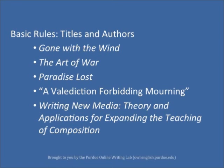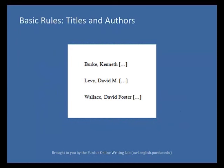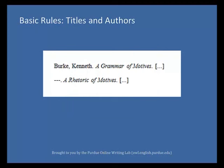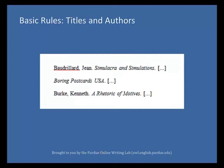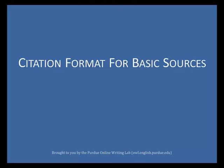Capitalize each word in the titles of articles, books, etc., but only capitalize articles, prepositions, or conjunctions if one is the first word of the title or subtitle. Use italics for the titles of larger works, like books or magazines, and quotation marks for titles of shorter works, like brief poems or articles. Entries are listed alphabetically by the author's or editor's last name. Author names are written last name first with middle initials following the first name. Do not list titles such as doctor or PhD; however, include suffixes such as junior. If you have cited more than one work by a particular author, order the entries alphabetically by title and use three hyphens in place of the author's name for every entry after the first. If the work has no known author, alphabetize it by its title.